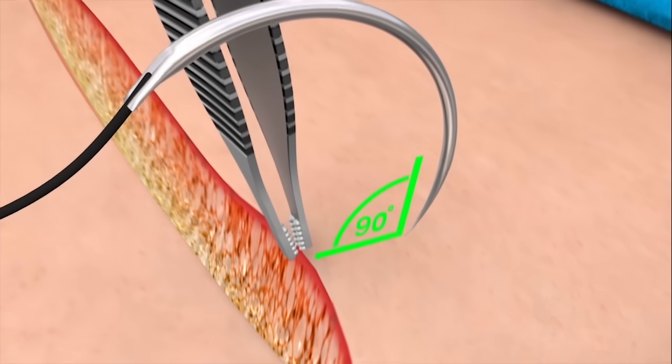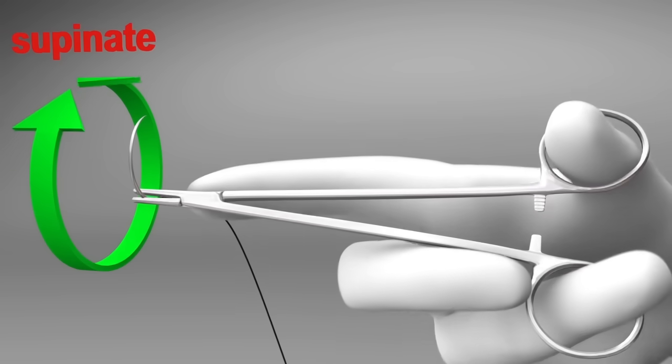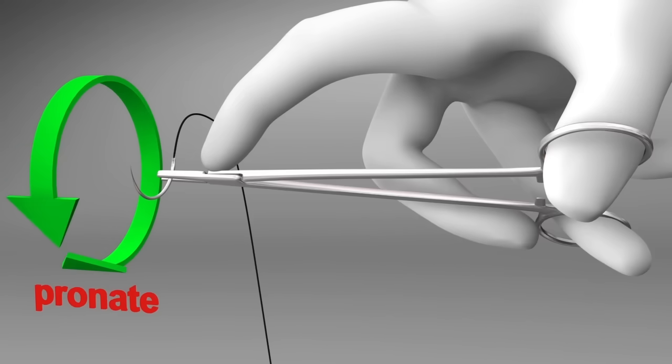Insert the needle with the point at 90 degrees to the skin. Rotate the needle smoothly through the skin by supinating the forearm.